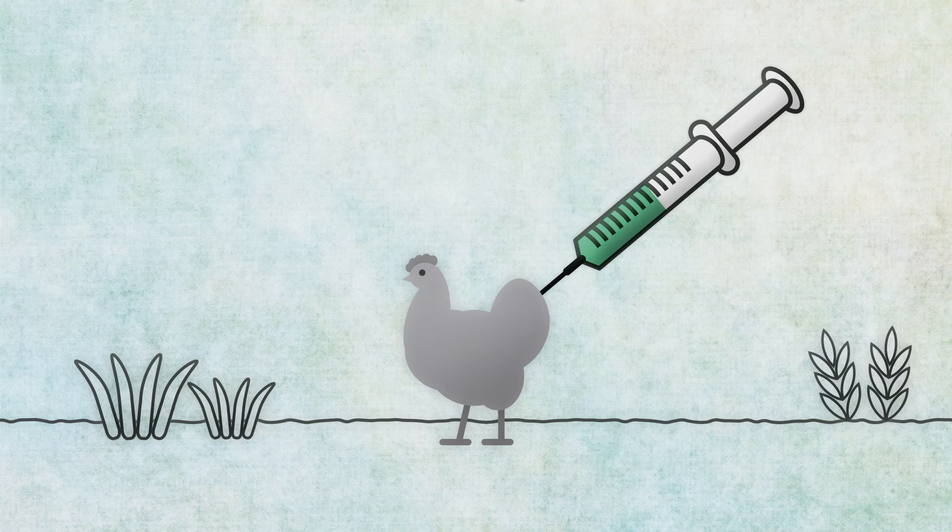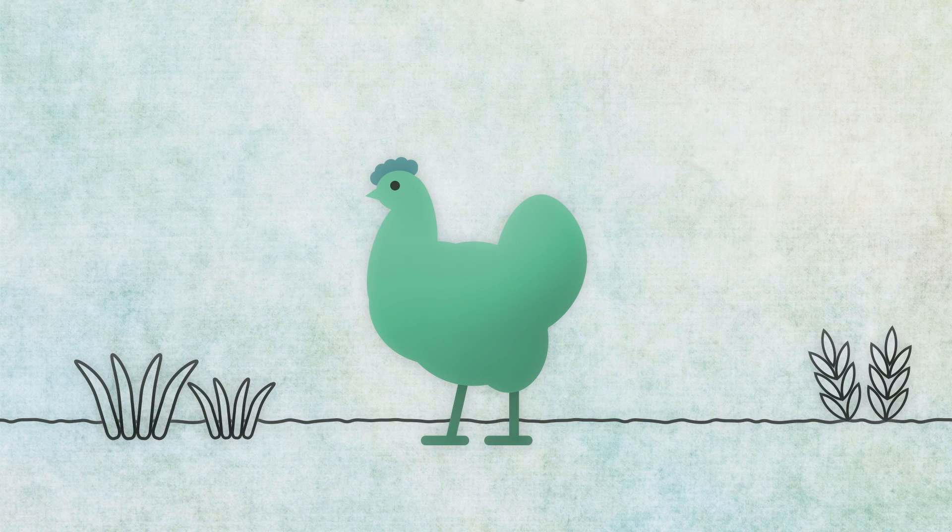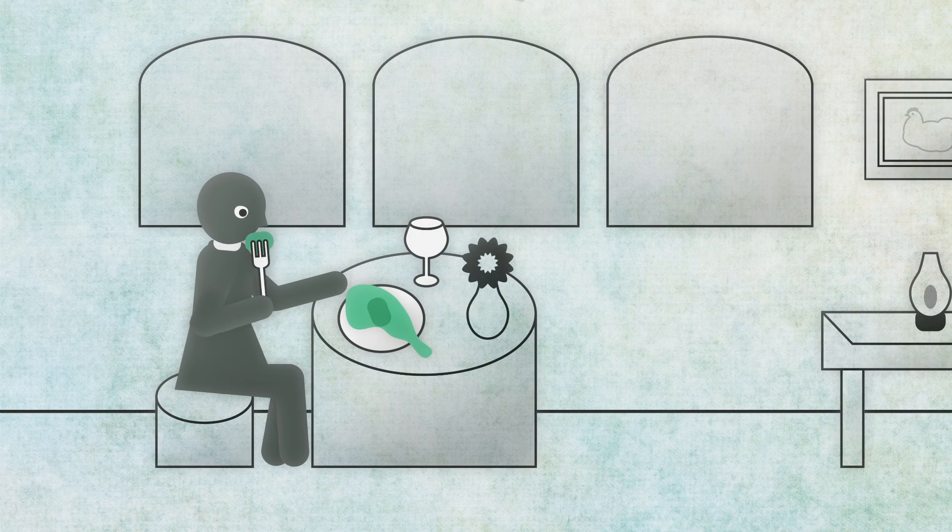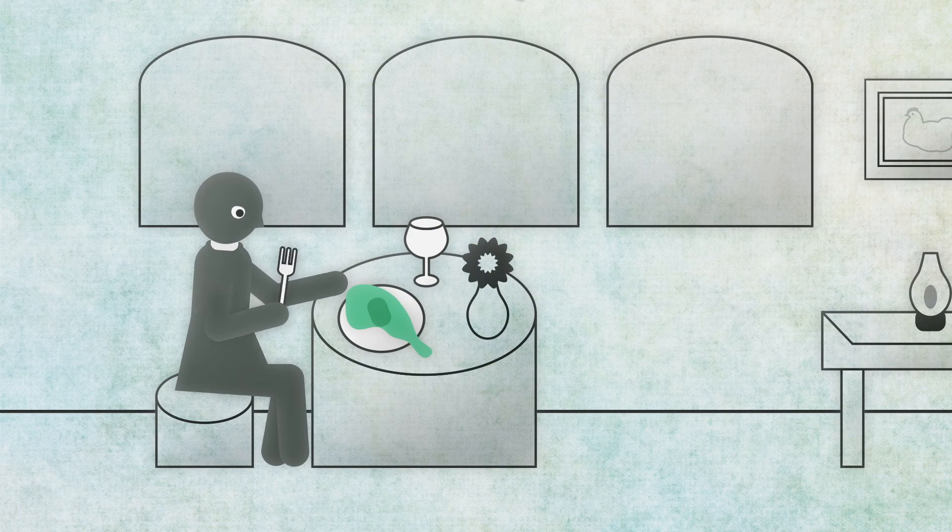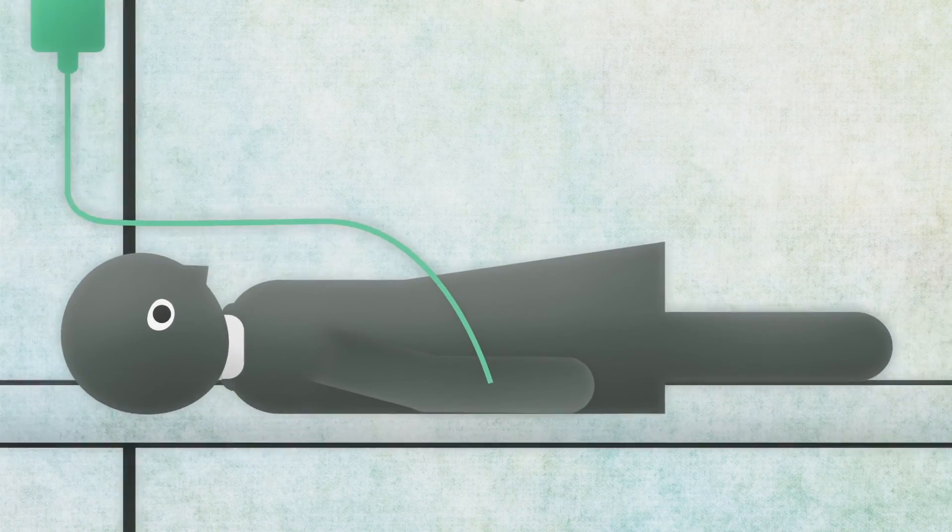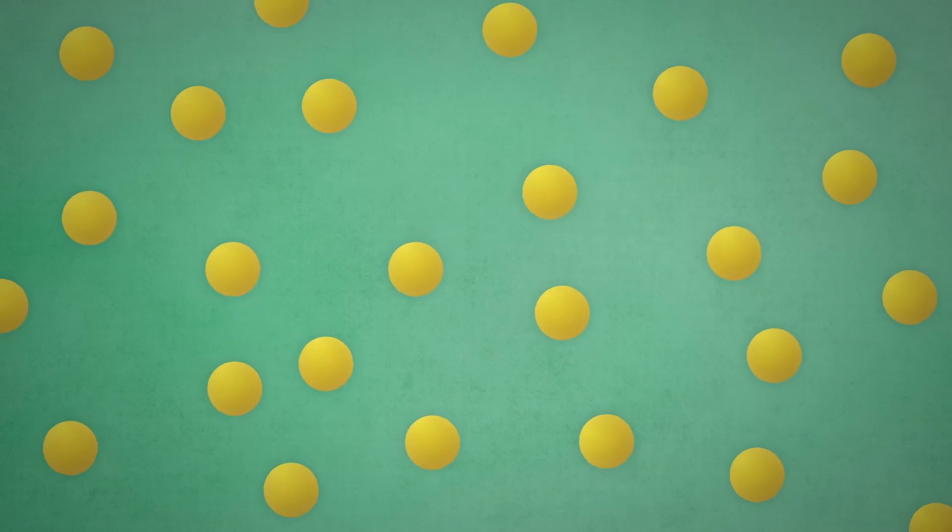The antibiotic Avoparsin, used to stimulate growth in animals, is responsible for the worldwide development of resistance to vancomycin, its equivalent used to treat humans. Vancomycin is one of the few remaining antibiotics that is effective against Staphylococcus aureus.